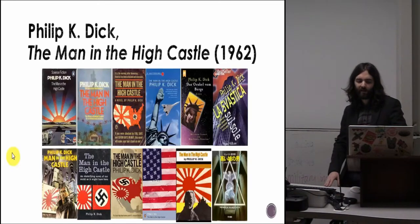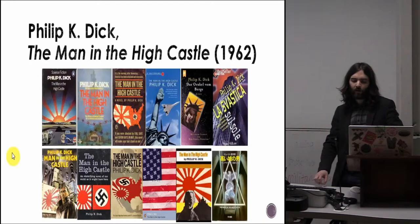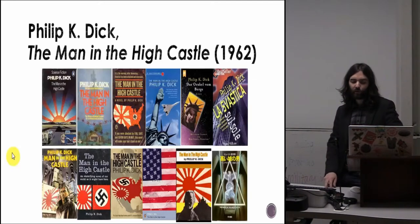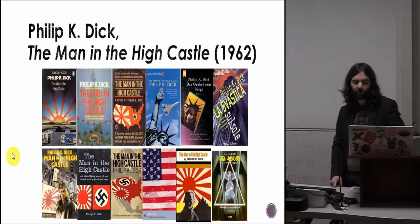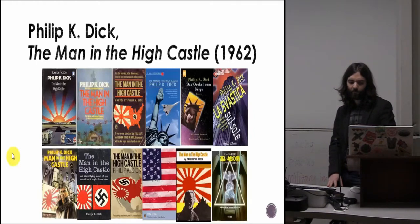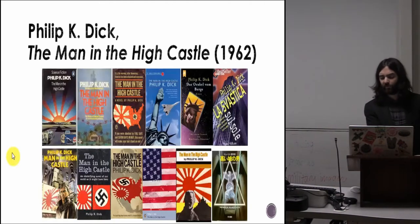The plot centers on characters existing on the fringes of the Nazi empire — they live mainly in Japanese-occupied California, or in a neutral buffer zone formed around the Rocky Mountains to separate the two victorious powers. As such, Dick spares us most of the severe excesses of the Nazis, and we only learn about the Germans and their empire through mainly second-hand sources and speculation.